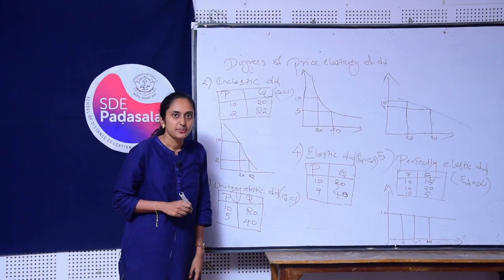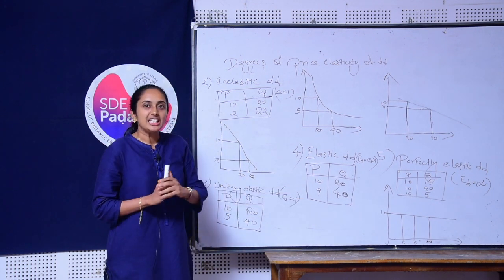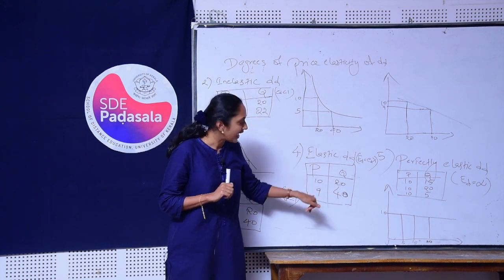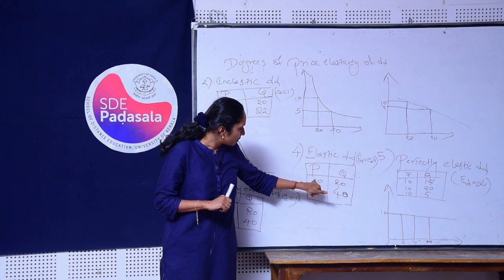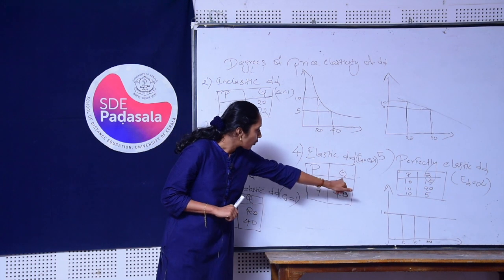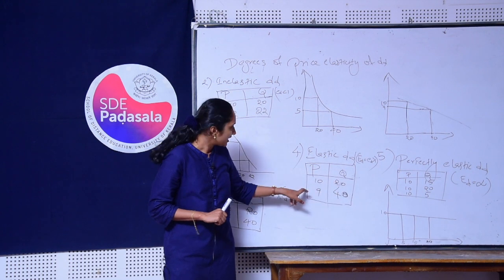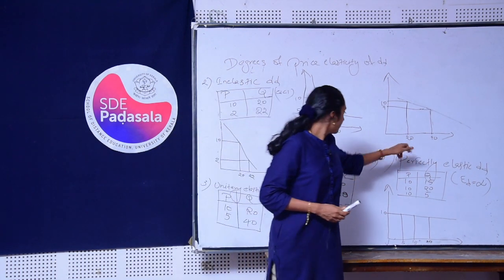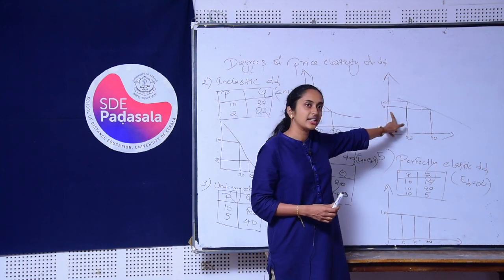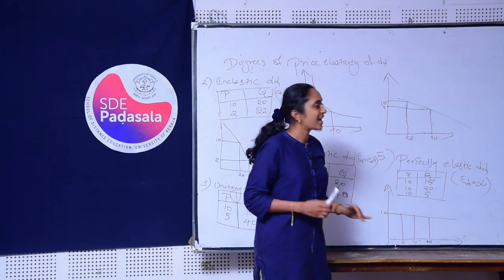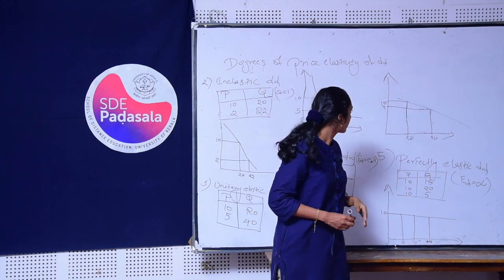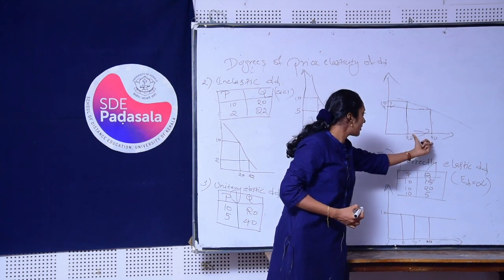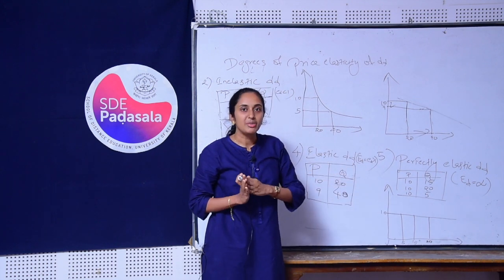The fourth degree is Elastic Demand. Demand for a commodity is said to be elastic when, to a percentage change in price, there is a more than proportionate change in quantity demanded. For example, the price falls by only 1 rupee but the quantity demanded increases by 20 units — that is, a small change in price causes a bigger change in quantity demanded. In the case of elastic demand, the demand curve is a flatter one, and the coefficient of elasticity of demand is greater than 1.